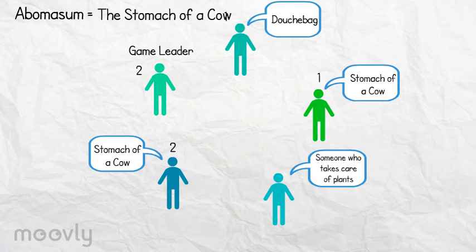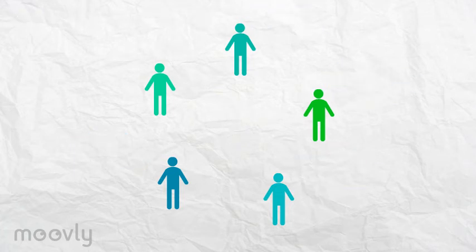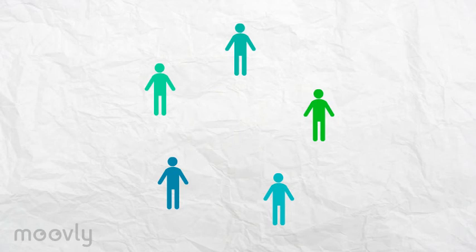Everyone notes his number of points, and the game leader points to a new person to be the new game leader, and the game will be played again. Repeat this until everyone has been a game leader once.